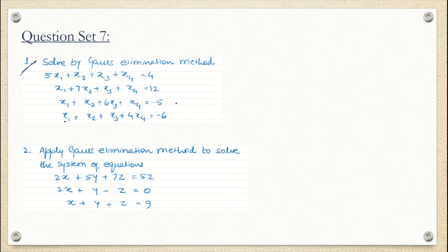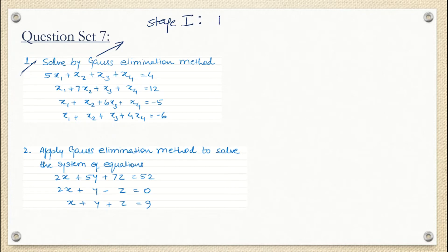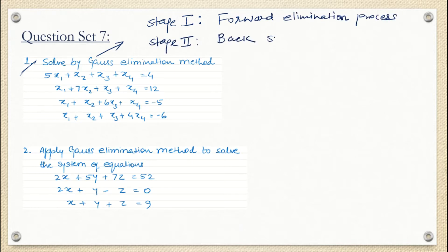We are going to take help of augmented matrix. When we use this Gauss elimination method, we actually use it in two stages. Stage one is called the forward elimination process. Stage two is called back substitution. These two stages will help us get the values of X1, X2, X3, and X4.